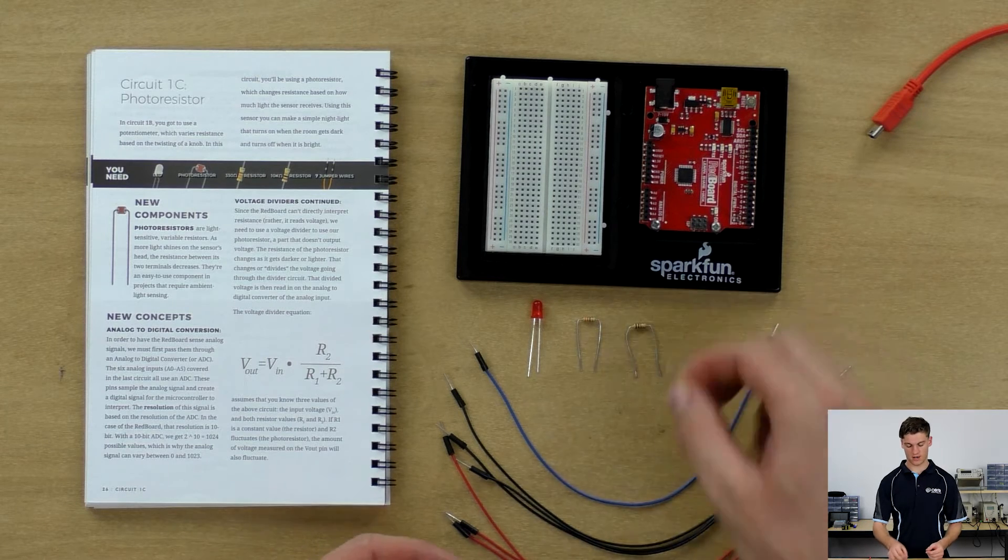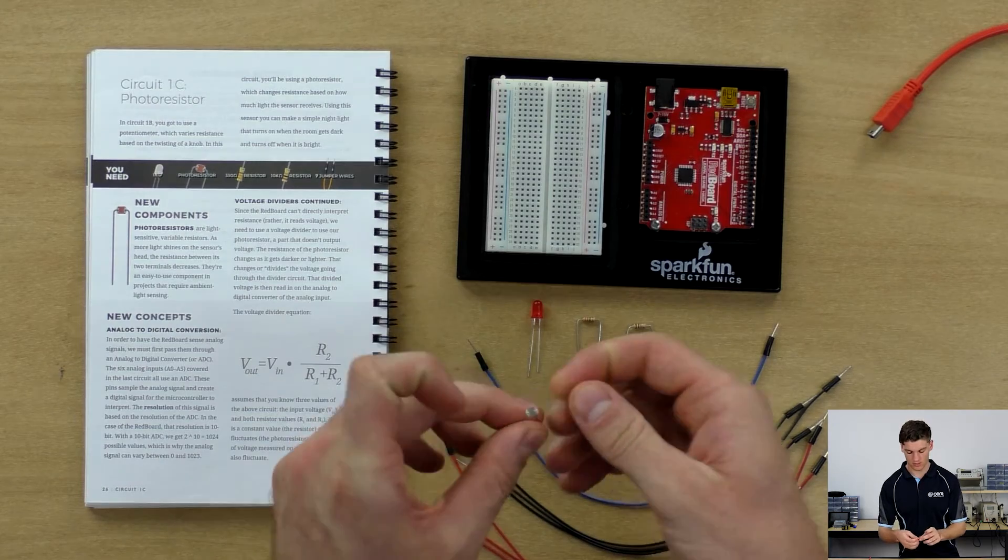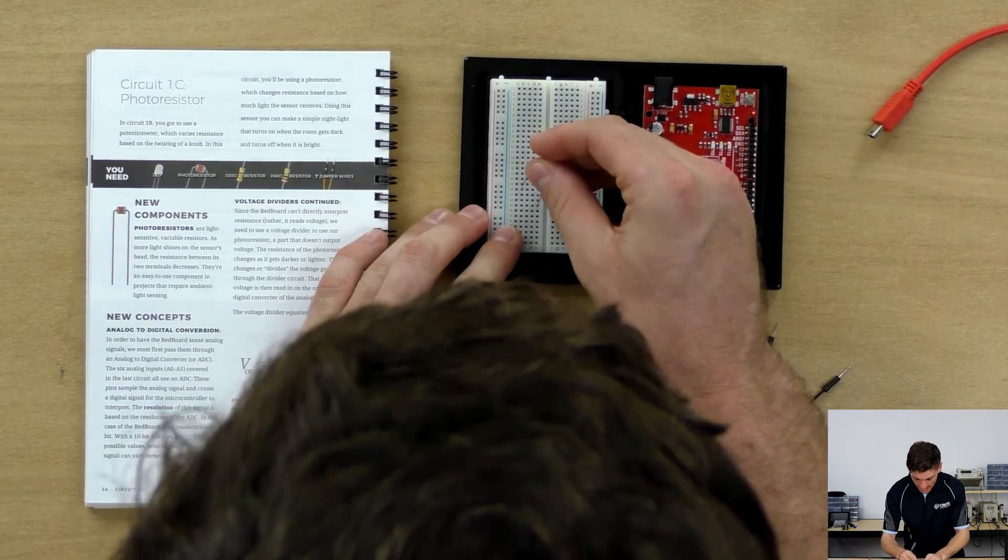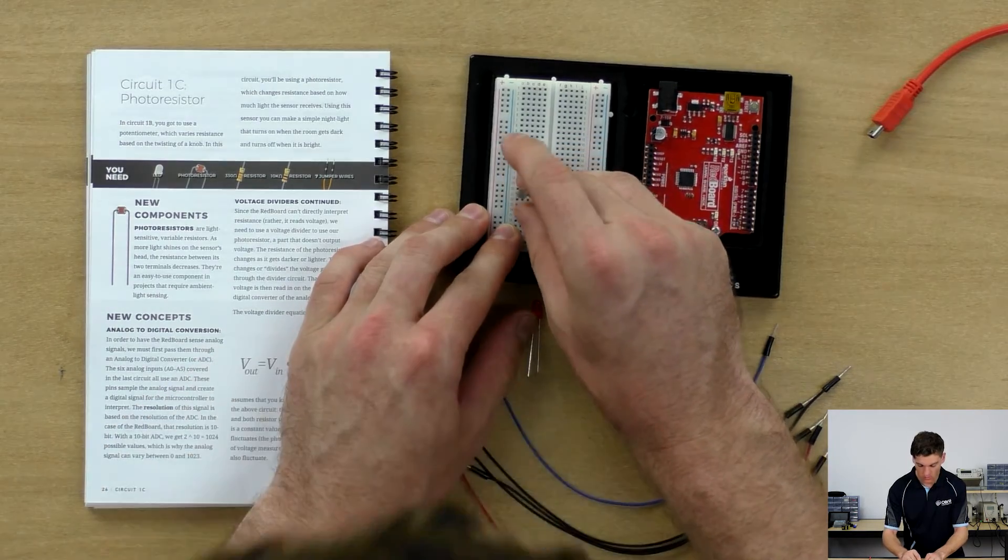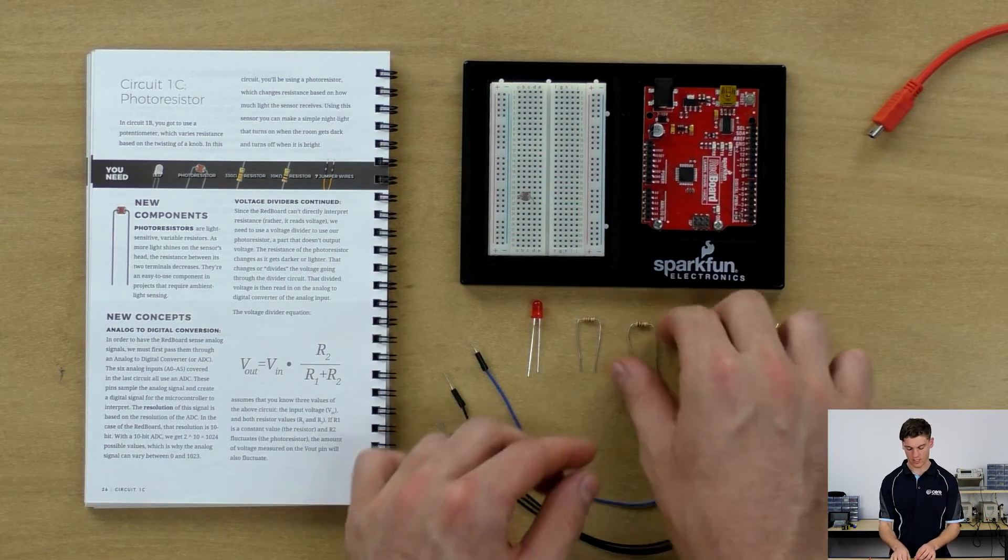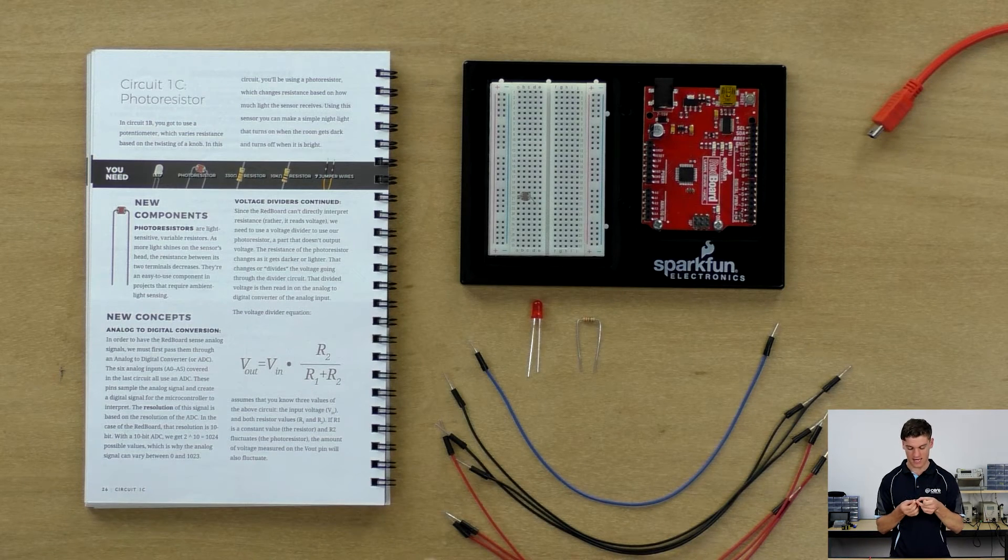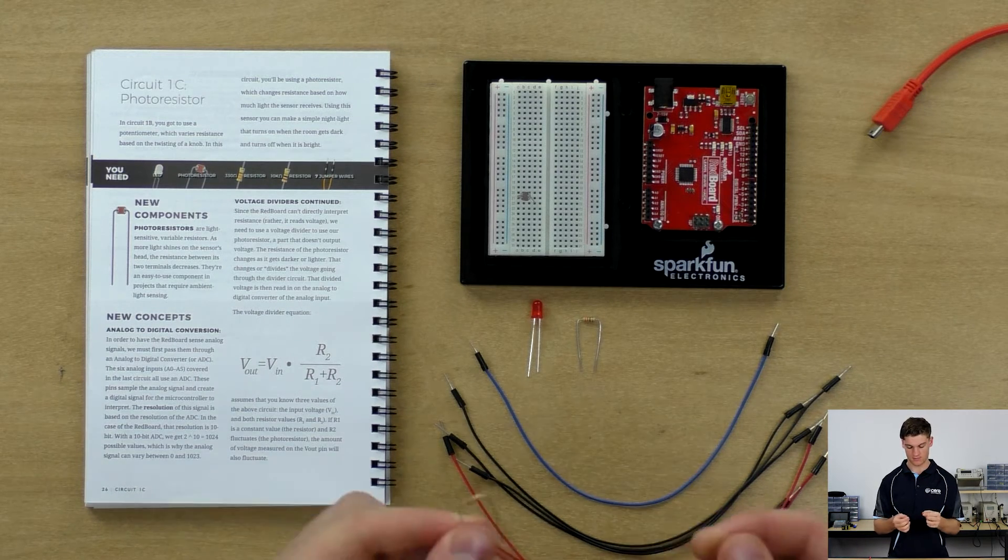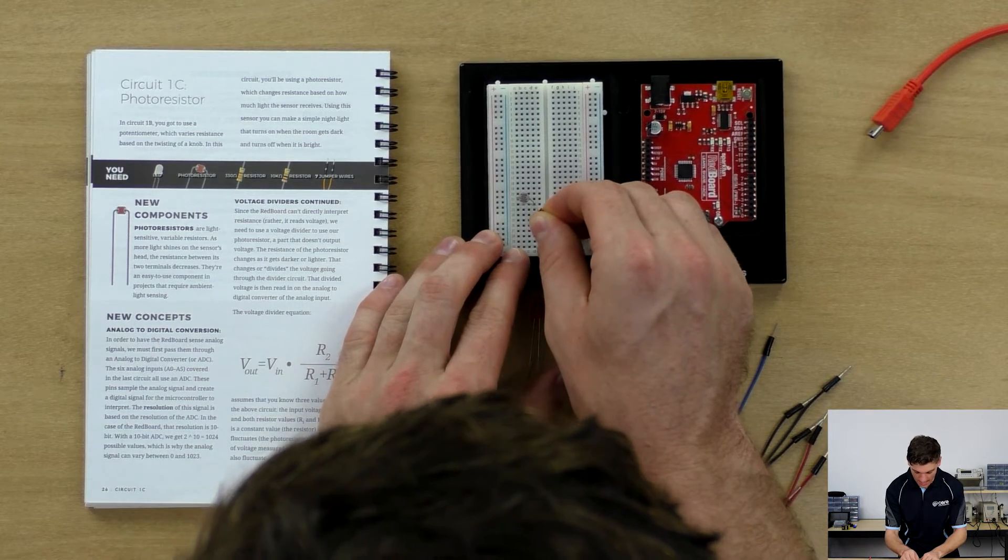So to connect the photoresistor up so that we can actually read the light intensity in the room, we are going to connect A21 to D22 with the photoresistor. We're going to use the 10k ohm which is the brown black orange resistor and we're going to connect A22 to D25.